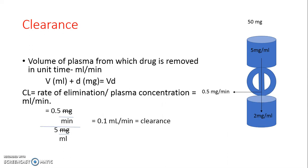So to start with clearance, we have to understand the movement of the drug. What is clearance? Clearance is the volume of plasma from which the drug is removed per unit time. It is not the amount of drug — it is the volume of plasma which gets cleared of the drug. That is clearance.